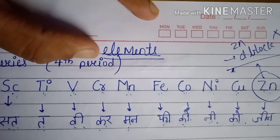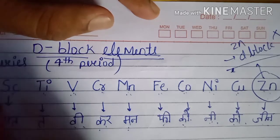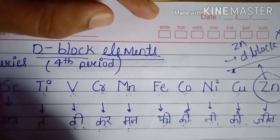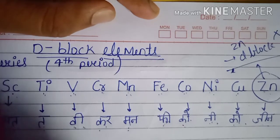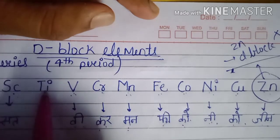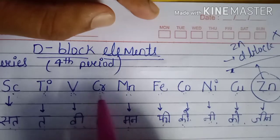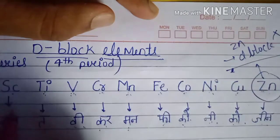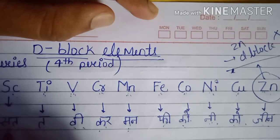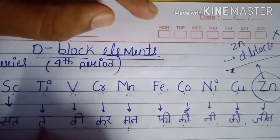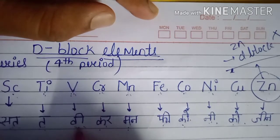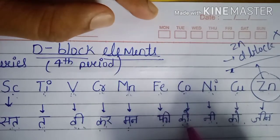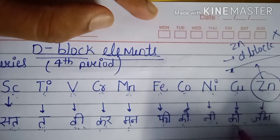Let's start the video. For the 4th period: Sc, Ti, V, Cr, Mn, Fe, Co, Ni, Cu, Zn. You will remember that with Sc we call Ti, we call V, Cr — the man of Fe — and Co to Ni, as of Cu. Cu-sa-co and i-cu-co-Zn.